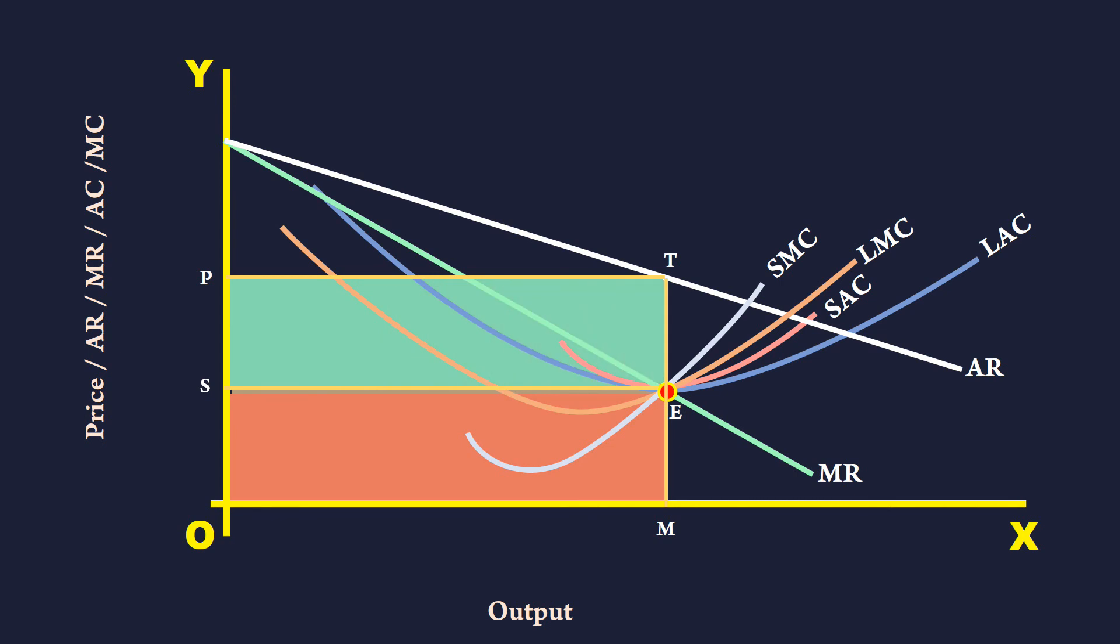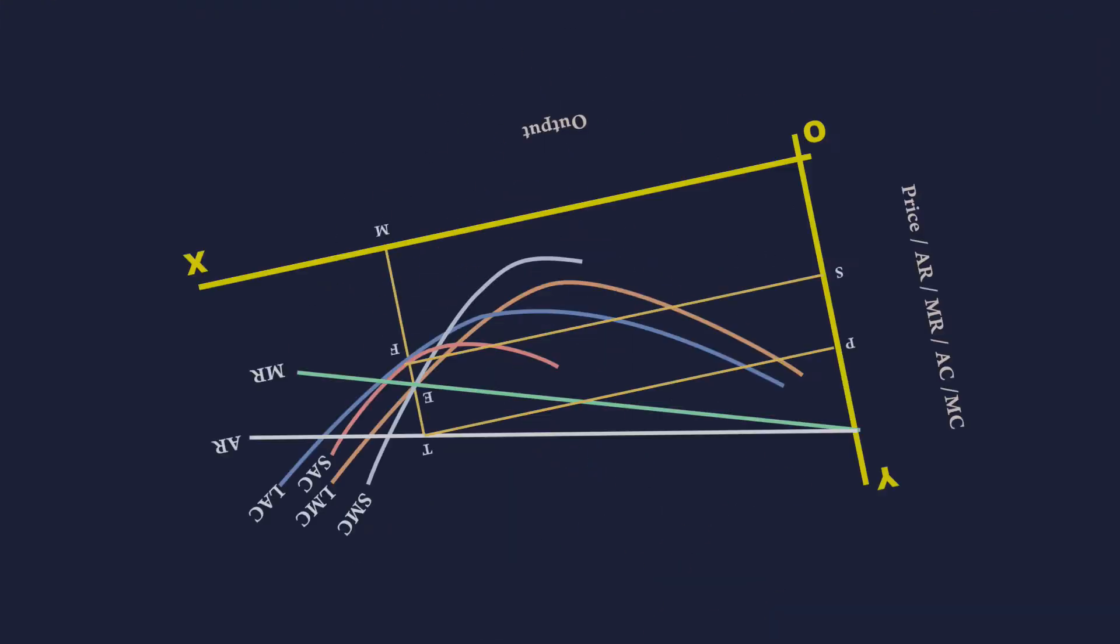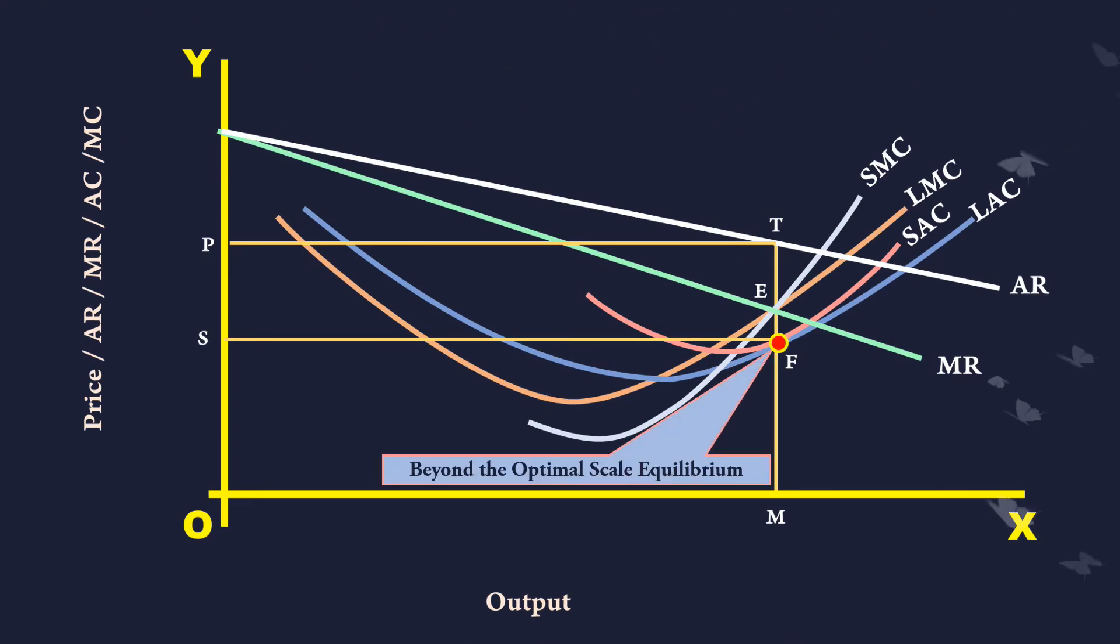There ends our discussion. But in the long run, a monopoly firm may be at beyond the optimal scale equilibrium also. How? We shall discuss it in the next lesson.